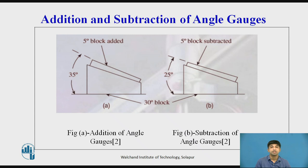Each angle gauge is a wedge, thus two gauges with their narrow ends together provide an angle which is the sum of the angles of the individual gauges. Subtraction of angles is obtained when the narrow ends are opposed as shown in figure. Each angle gauge is marked with engraved V indicating the direction of included angle.